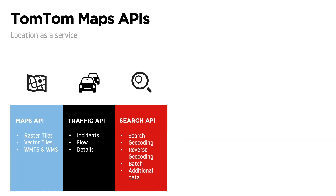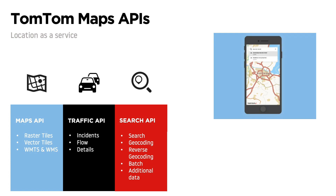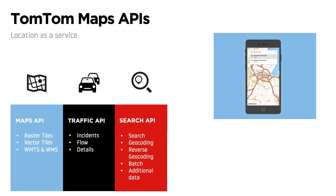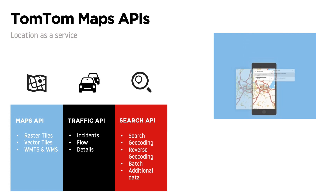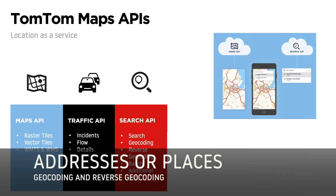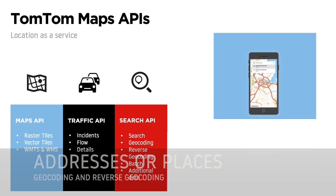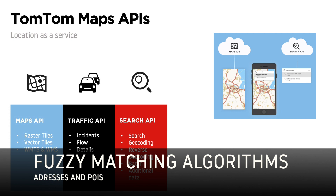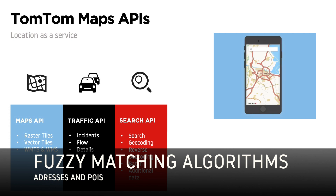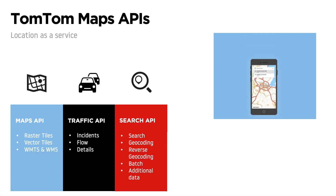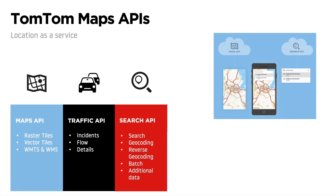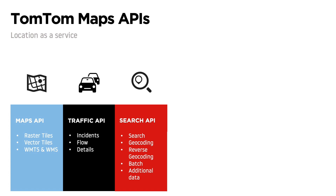The Search API enables reverse and forward geocoding, searching for an address or a place, either in an area or around a created route. And with auto-completion support, it provides an excellent query interface for interacting directly with your users.